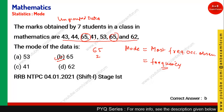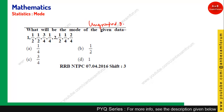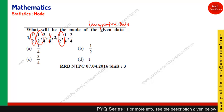The next question is again from ungrouped or raw data type. Mode is the most frequent data. Looking at the values: 1 appears once, 1/2 appears three times, 3/4 appears once, 1/4 appears twice, and 2 and 2/4 each appear once. So 1/2 has occurred three times, which is the highest frequency among all values. Therefore option B is the correct answer.